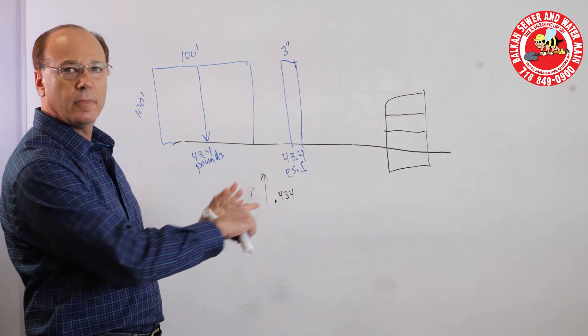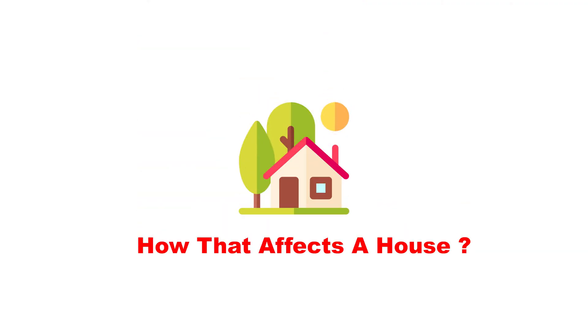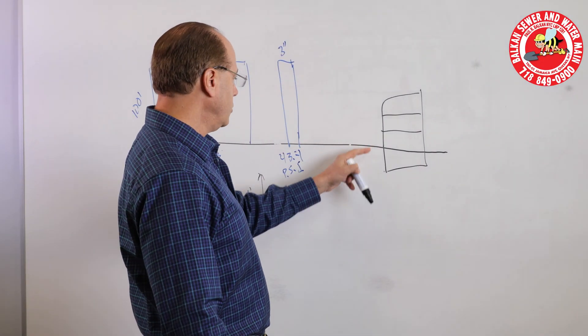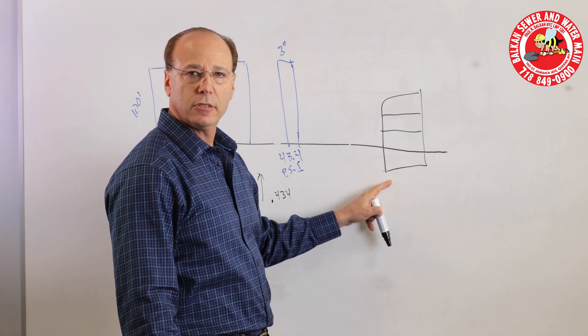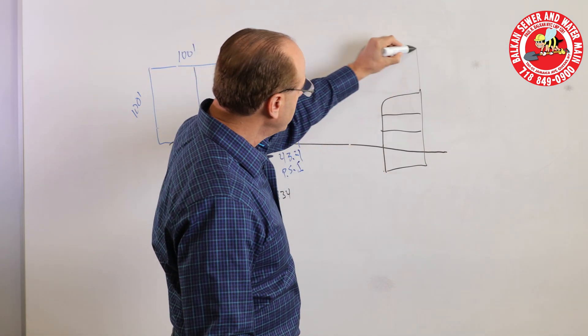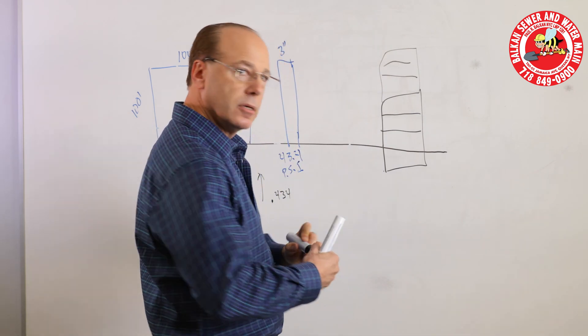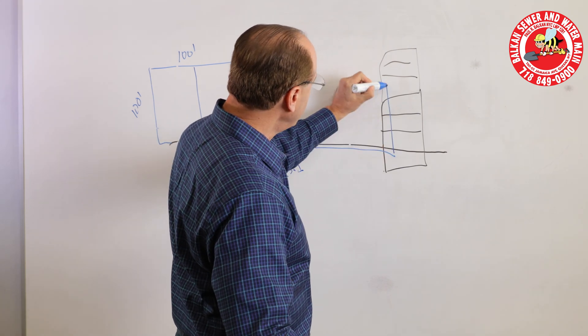Now how that affects a house is if you go below ground because you're adding height to the water your PSI will actually increase. As you go higher and higher your PSI will decrease because you're losing height.